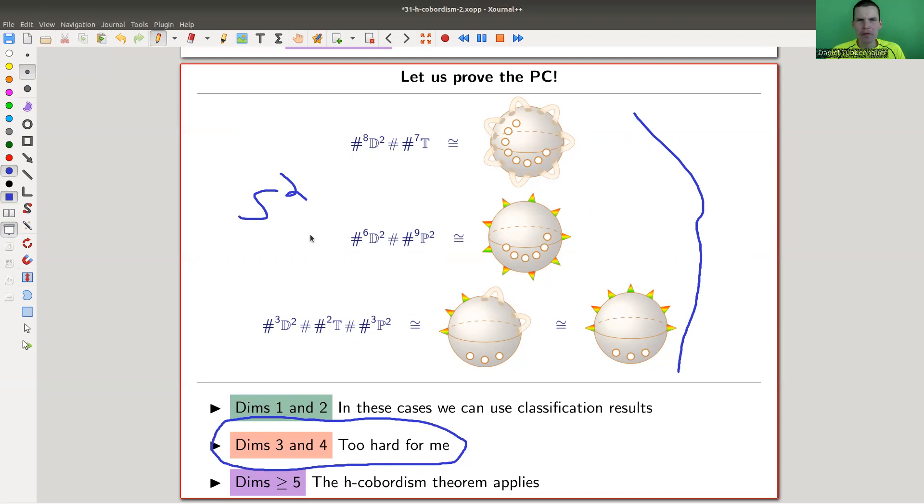And that's kind of a weird proof of the statement because you have a classification result and you just look at the list. So that's kind of the easy one. And I mentioned higher, three or higher, there's no classification anymore and you need some better tricks. So this was essentially known to Poincaré already.